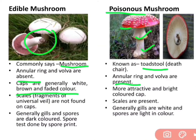Scales — fragments of the universal veil — are not found on caps of edible mushrooms. Universal veil ke fragments yani scales edible mushroom mein nahi hote hain, aur poisonous mushroom mein yeh present hote hain. In the picture, little wart-like structures are present on the cap.